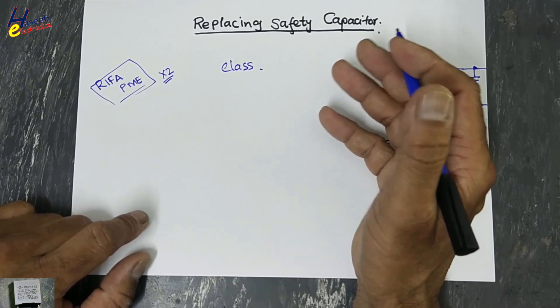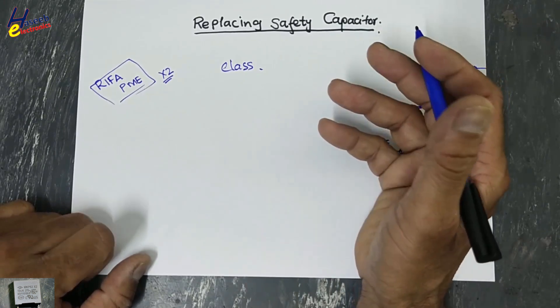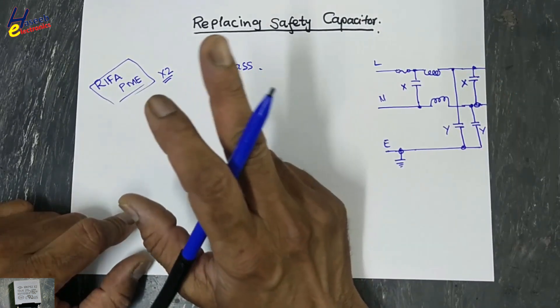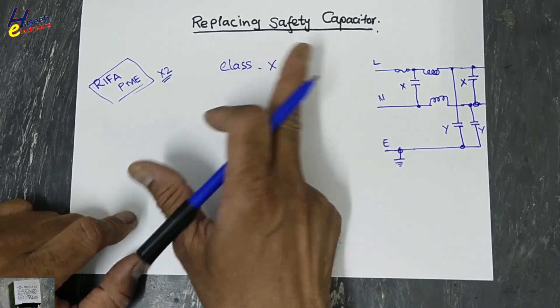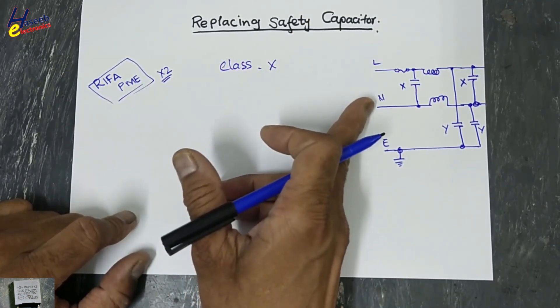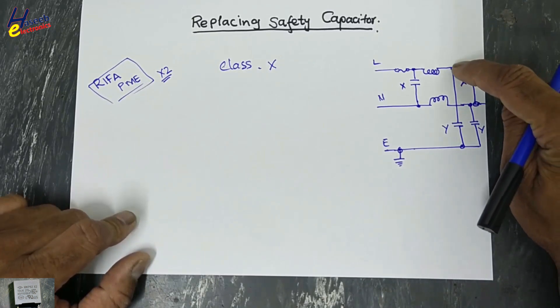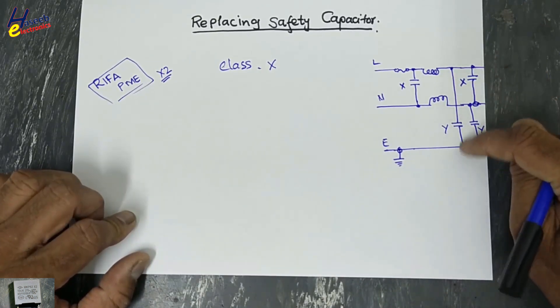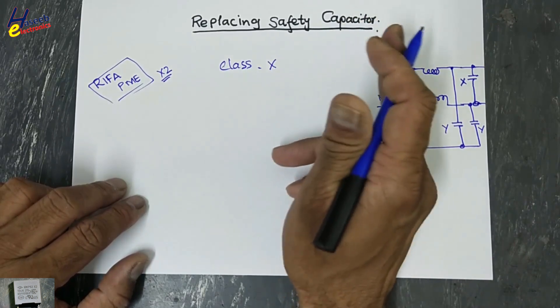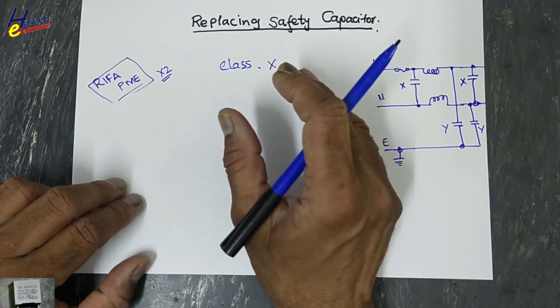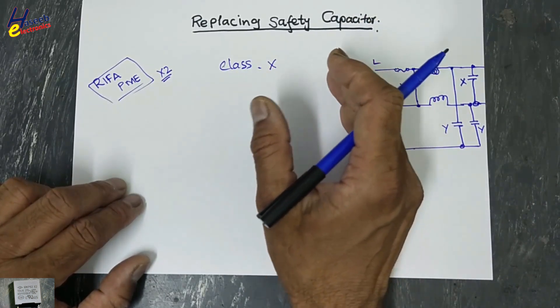Class X1, X2, X3, Y1, Y2, Y3, whatsoever. Either it is class X or class Y. Class X capacitor is used in line and neutral. Class Y capacitor is connected between line and earthing point, neutral and earthing point. X1, X2, X3 will depend on the voltage ratings and the circuit category.